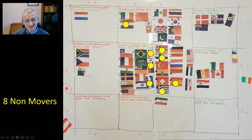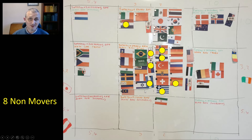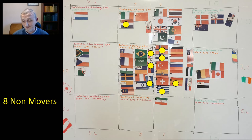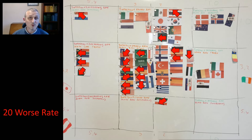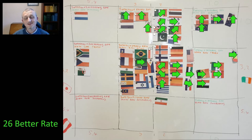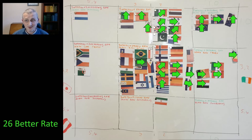Within the squares there have been eight non-movers — countries that were in the same box a month ago as they are now. We have 12 boxes. Between then and now they would have shuffled around a bit no doubt, but this is where they're at now. We have 20 that are in a worse state, and I'm going to look at a couple of these to see whether we should be concerned.